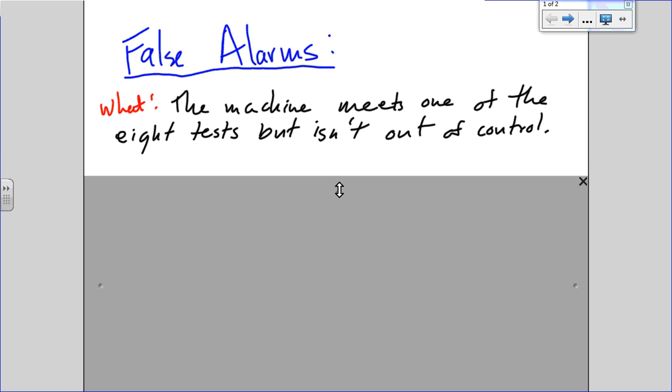So what a false alarm is, is that the machine meets one of those eight tests, but it isn't out of control. It's showing those characteristics, but it's just maybe doing what it should be, and maybe it goes back to normal afterwards.